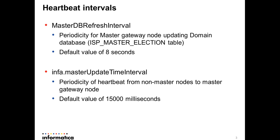The master gateway node in an Informatica domain updates the domain database — a specific table named ISP master selection — every few seconds. This periodicity is 8 seconds by default, and it's configurable through the master db refresh interval property.